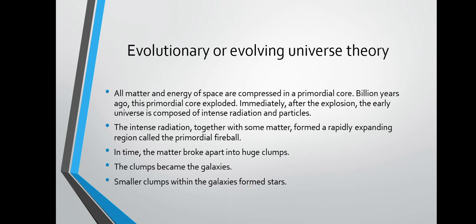After the primordial core exploded and the early universe was composed of radiations and particles, those radiations together with more matter formed the primordial fireball. In time, the matter broke apart into huge clumps, and those clumps became the galaxies. The smaller clumps within the galaxies formed stars, as galaxies are made of billions and trillions of stars.